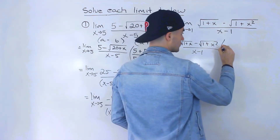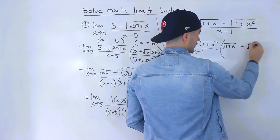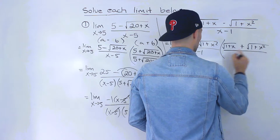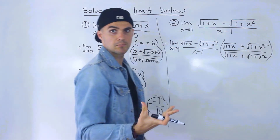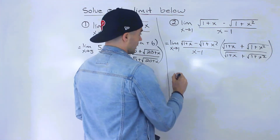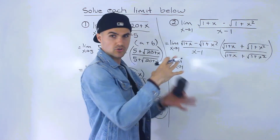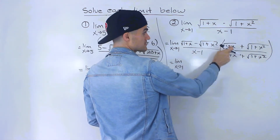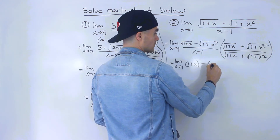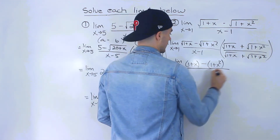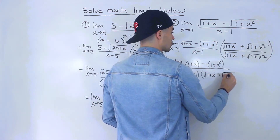We multiply by the conjugate of the numerator, which is (root of 1 plus x plus root of 1 plus x squared), over the same expression — so we're multiplying by 1 and keeping the expression the same. This is a difference of squares, so the middle terms cancel and we just multiply the ends together: root(1 plus x) times root(1 plus x) gives 1 plus x, then negative times positive, and root(1 plus x squared) times root(1 plus x squared) gives 1 plus x squared. This is all over (x minus 1) times (root of 1 plus x plus root of 1 plus x squared).